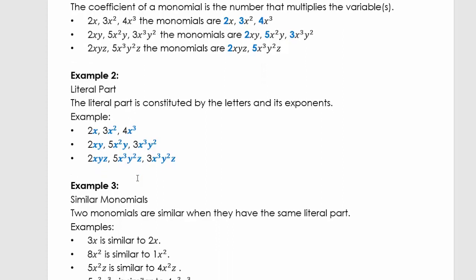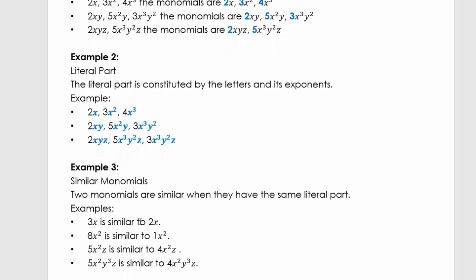In example three, we're going to look at similar monomials. Two monomials are similar when they have the same literal part. Let's quickly look at these: 3x is similar to 2x because the literal parts are the same. 8x squared is similar to 1x squared because the literal parts are the same.